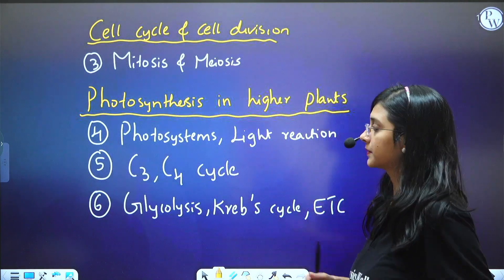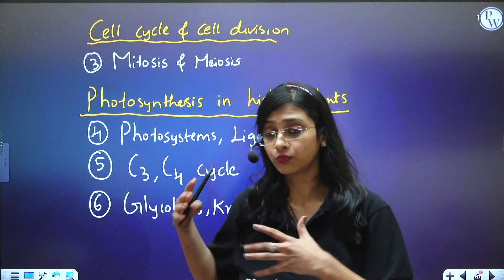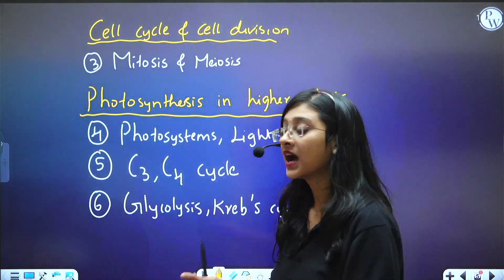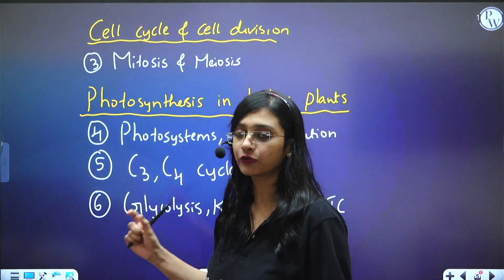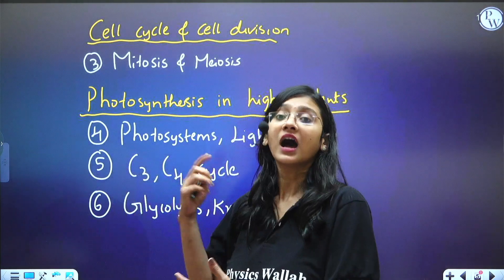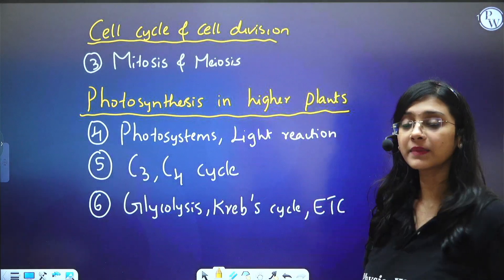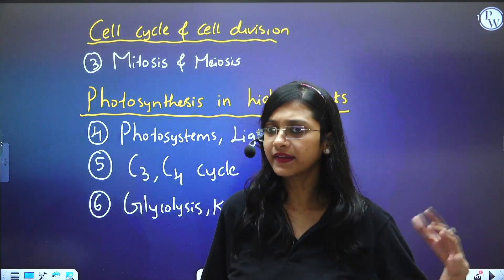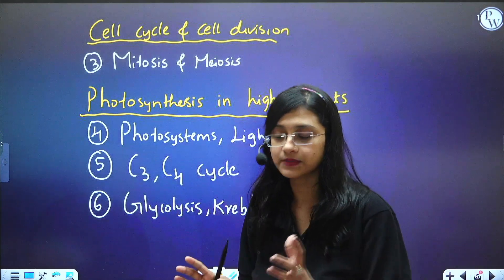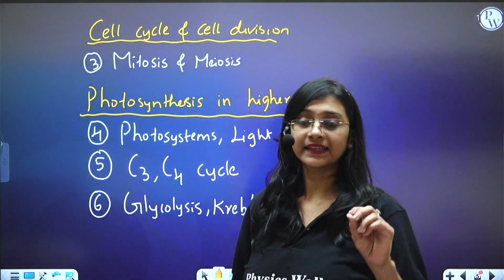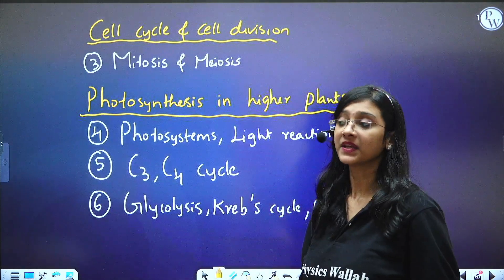From Photosynthesis in Higher Plants, it is a high-weightage chapter for your NEET exam. Questions are coming from the light reactions, which include Photosystem I and II, along with different equations. You need to study the light reactions and photosystems. The C3-C4 cycles are also important — Calvin cycle and the Hatch-Slack pathway (C4 cycle) — and which plants show each pathway.